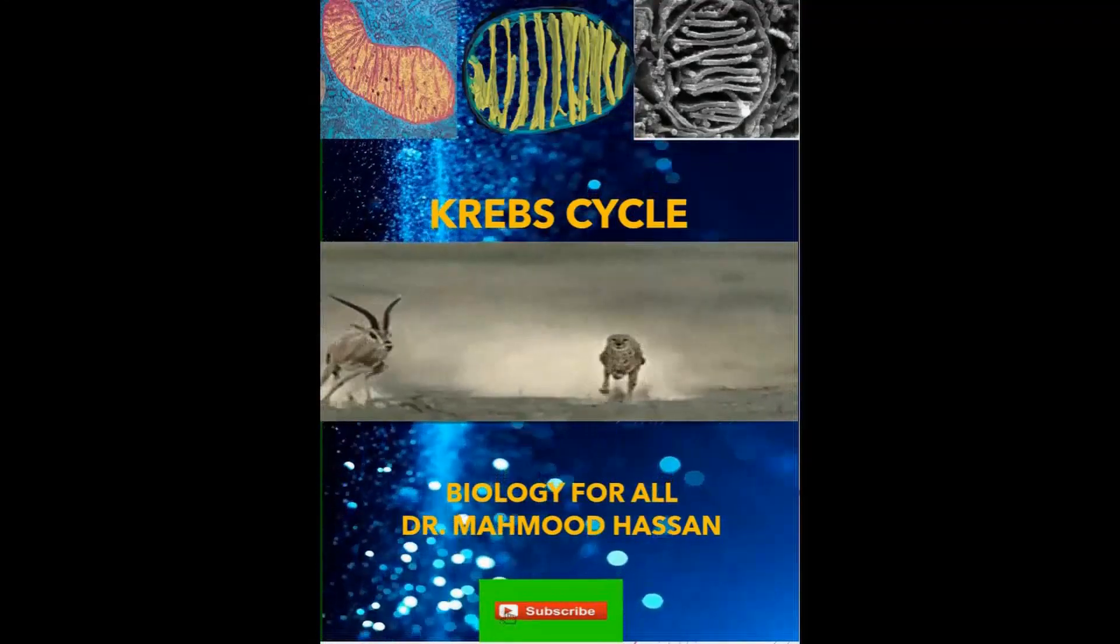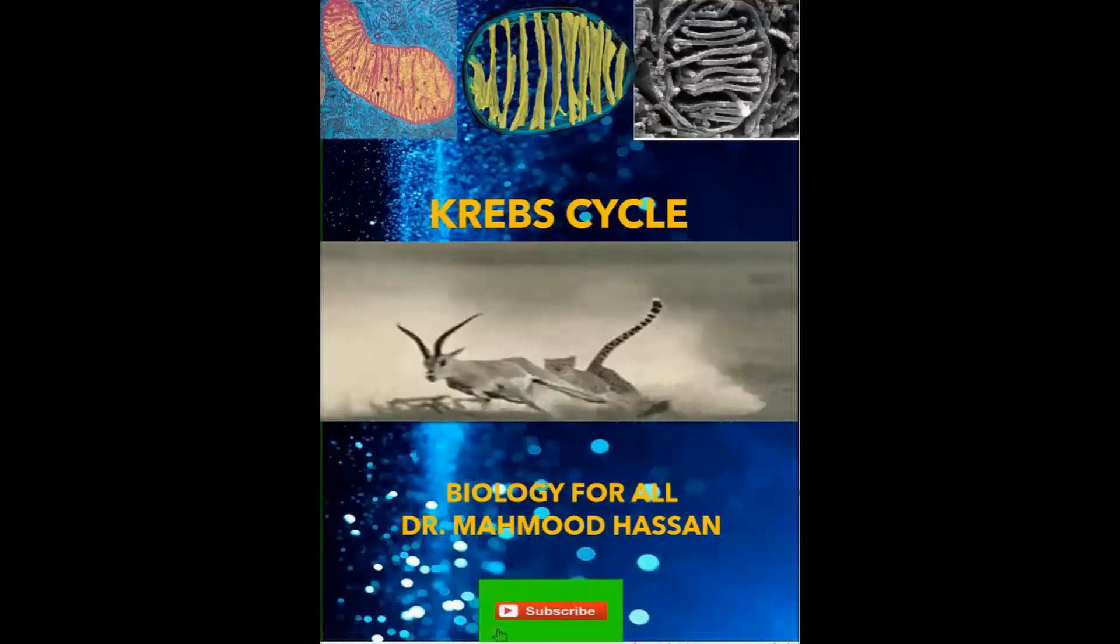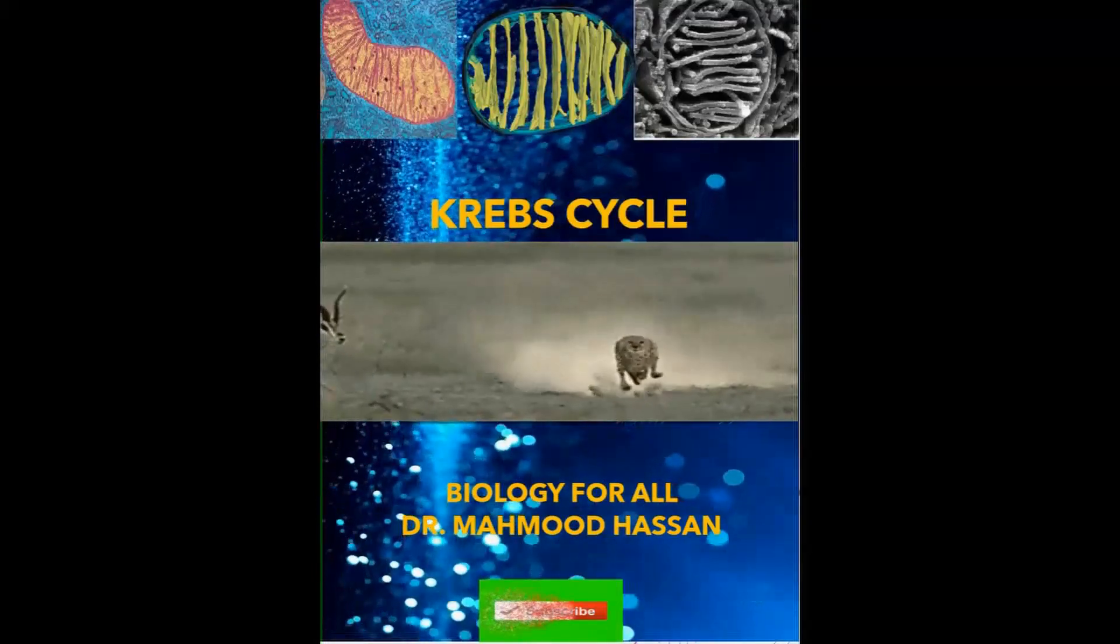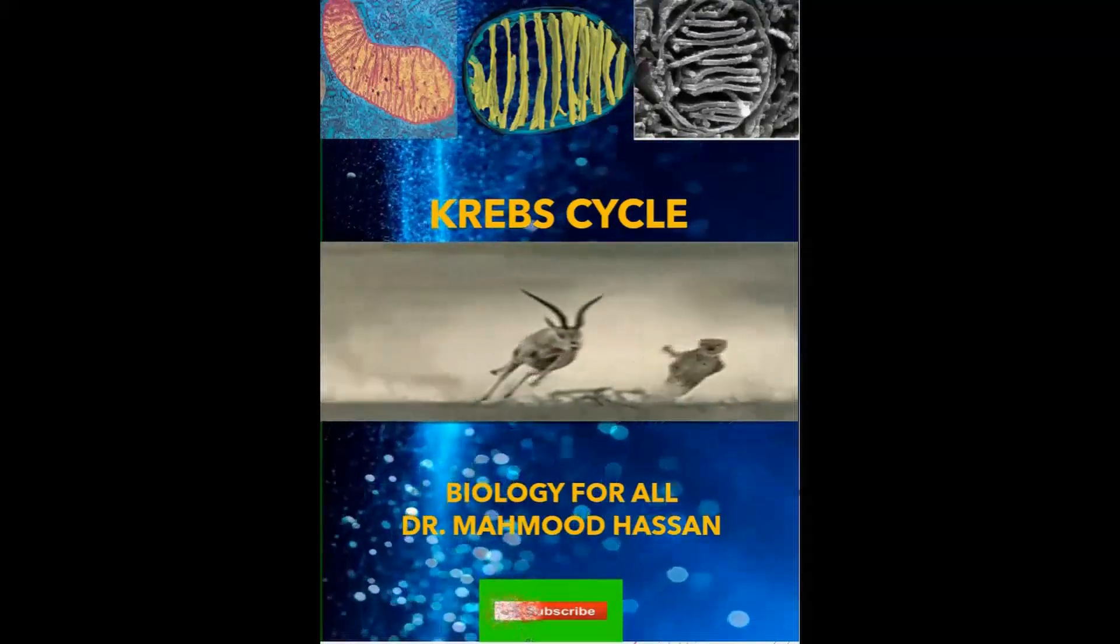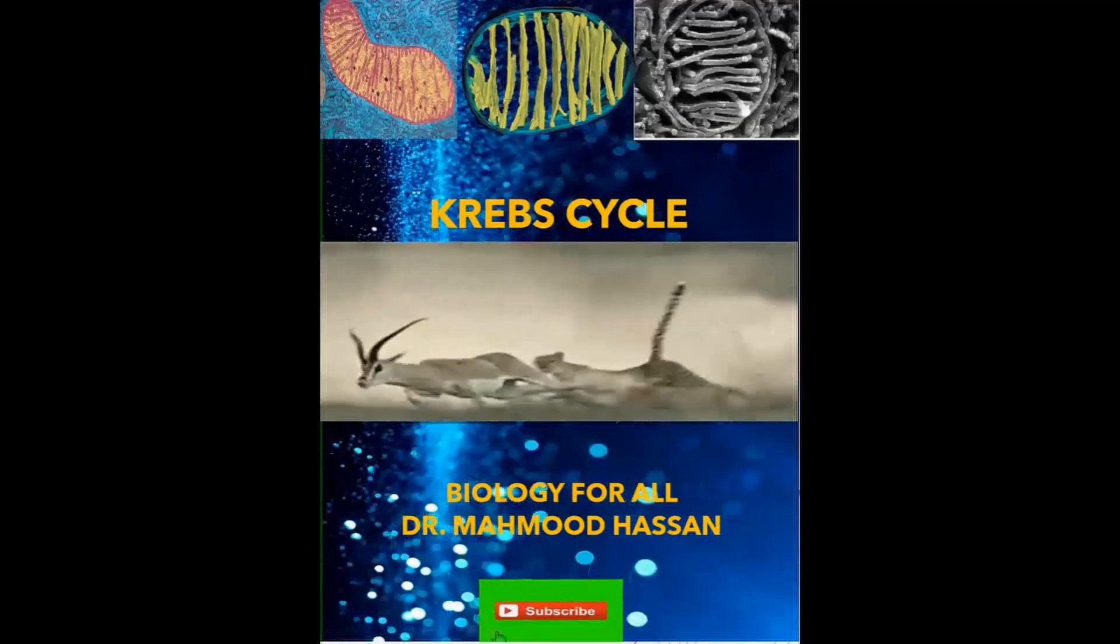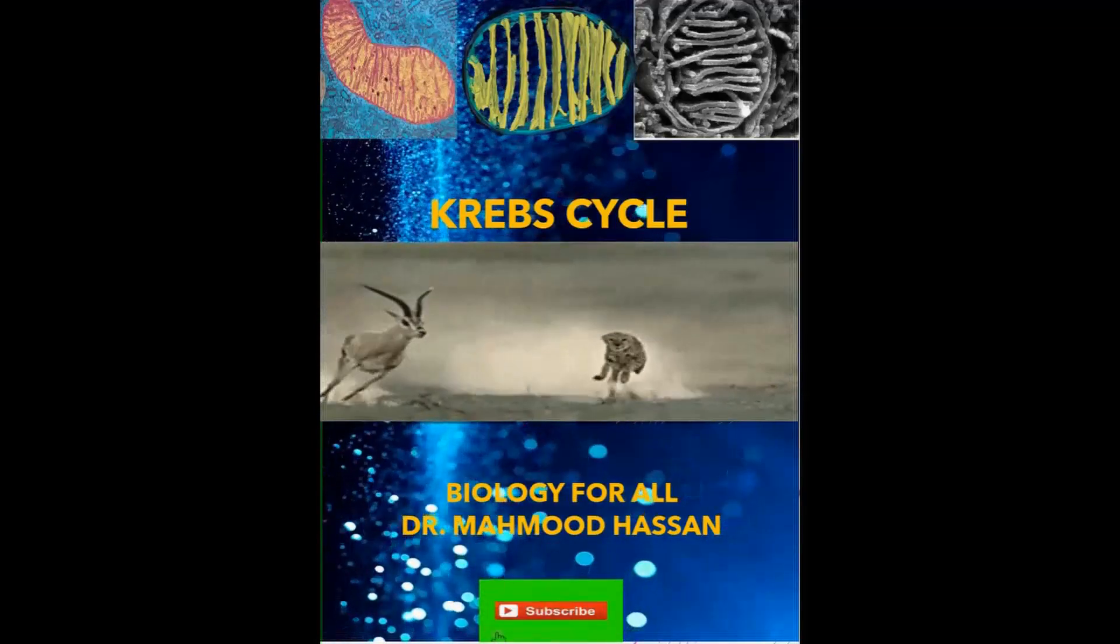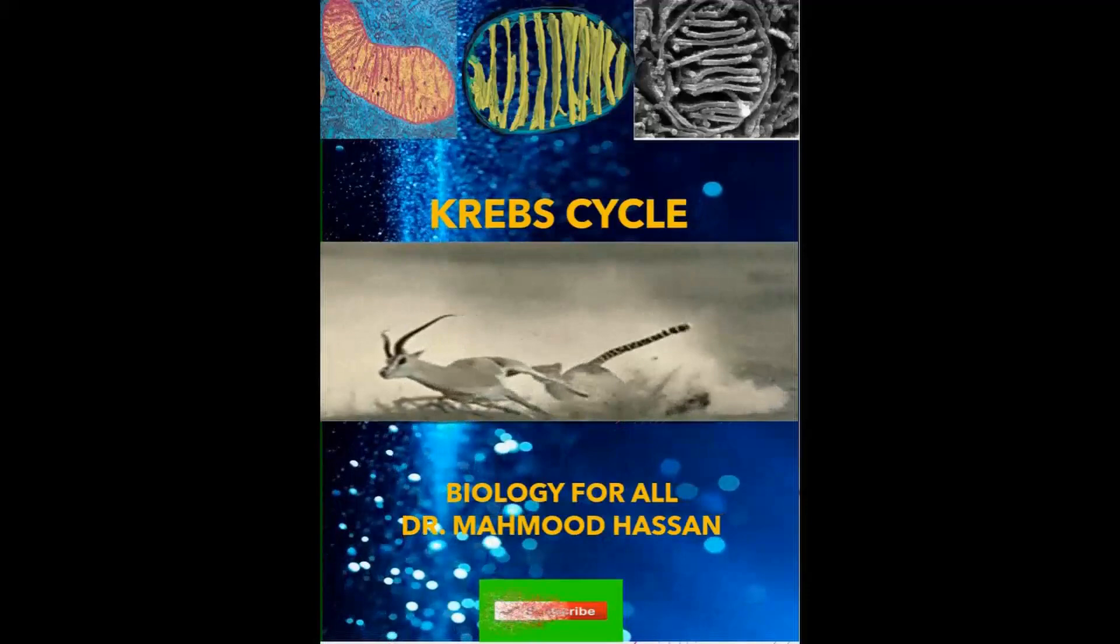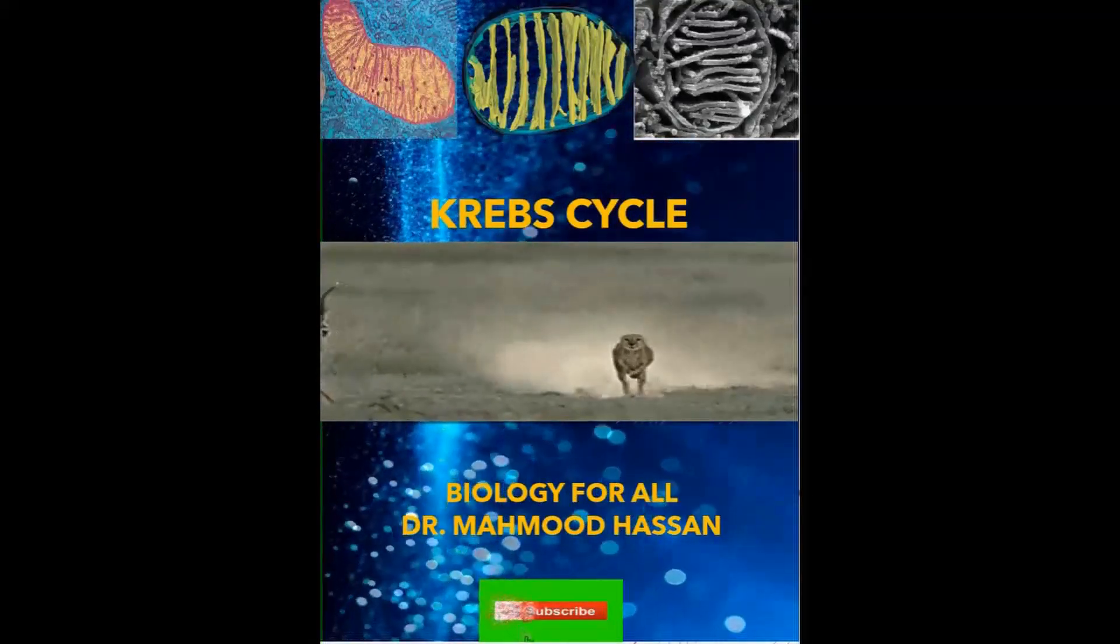In contrast, the inner membrane contains more than 100 different polypeptides and has a very high protein to lipid ratio. The inner membrane is virtually devoid of cholesterol and rich in an unusual phospholipid which are characteristic of bacterial plasma membrane from which the inner mitochondrial membrane has presumably evolved.